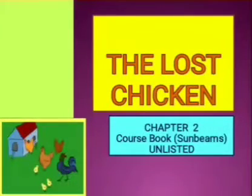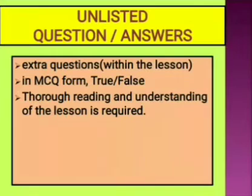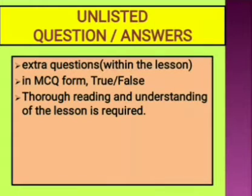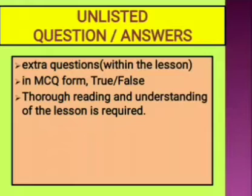Let's begin with the unlisted part of the lesson, The Lost Chicken. You should know what 'unlisted' means. These are extra questions which are not given in the book back exercises — no list of these questions is given to you in your book. These questions come from within the lesson, meaning when you read the lesson carefully and thoroughly and understand it completely, only then will you be able to answer them.